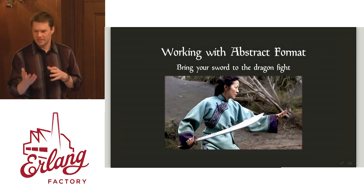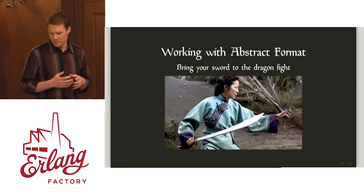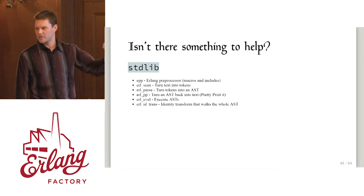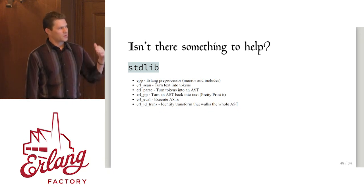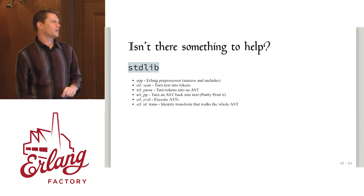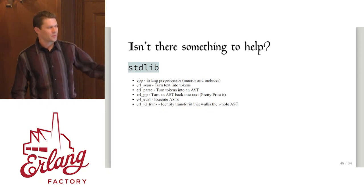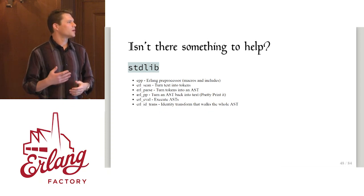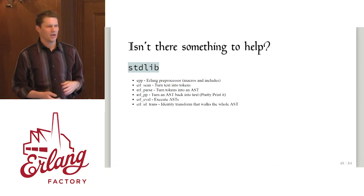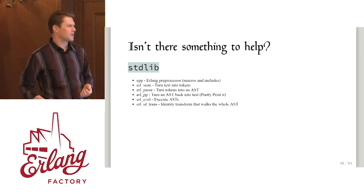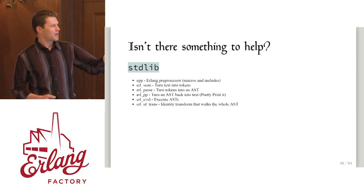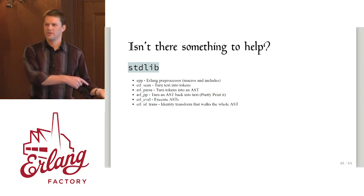Just like the scanning and tokenizing, the standard library comes with a number of tools that are really helpful for this. EPP — the Erlang preprocessor — deals with pound defines and include files. erl_scan turns a block of text into a series of elements. Then erl_parse builds that into the syntax tree. There's this really handy module erl_prettypr that can take a syntax tree and go right back to text — so you have a complete loop, especially useful for debugging. You pick out some abstract syntax node, pass it to erl_prettypr, and see exactly what that syntax node would look like in source code.